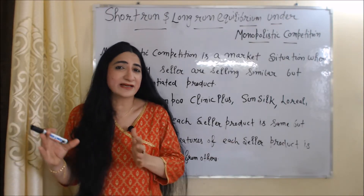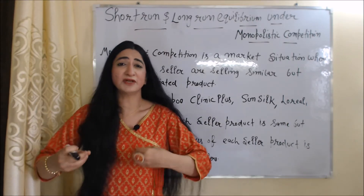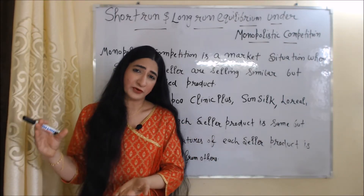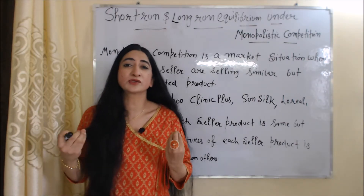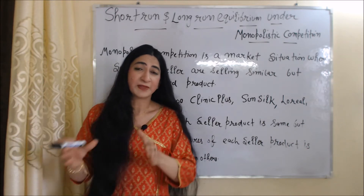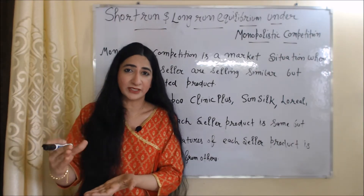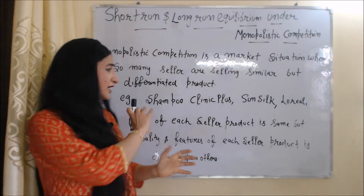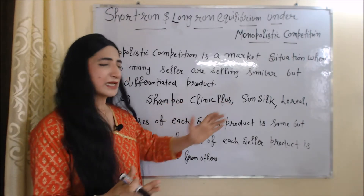What is monopolistic competition? Monopolistic competition is a market situation where so many sellers are selling similar but differentiated products. In case of monopolistic competition, the use of each seller's product is the same but quality and features are different. For example, there are so many companies who sell shampoo, like Clinique Plus, Sunsilk, and L'Oreal.